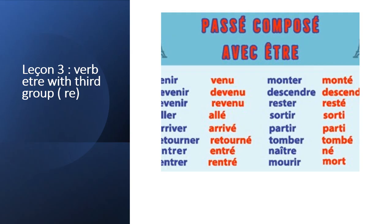Lesson 3. Leçon 3. Le verbe être. With third group. In this lesson, we will be learning about conjugating the verb être with the third group — la troisième groupe — which is ending by RE.